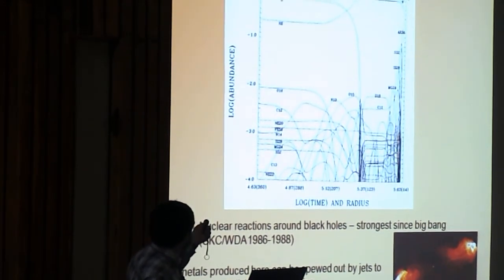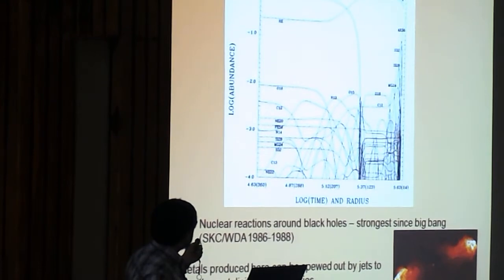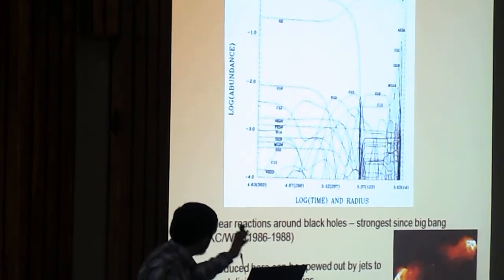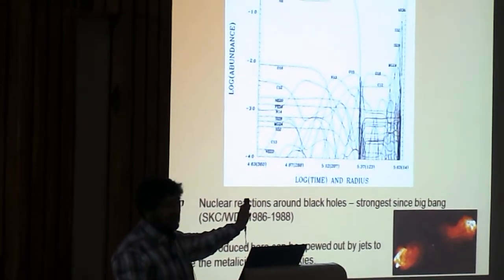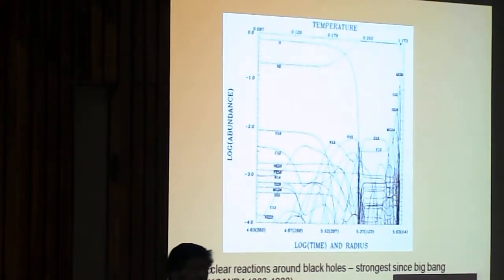So matter is coming from the companion star. And the matter, as it is falling towards the black hole, you can see that this composition is changing. And this composition, unfortunately, is changing.